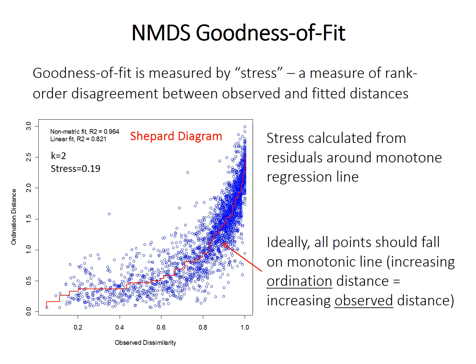The method uses this iterative technique — basically trial and error — to find the best arrangement of points in ordination space. In this case, 'best' is defined by a parameter called stress, which is a measure of the goodness of fit. The Shepard diagram shown here plots dissimilarity in the full-dimensional real-world space on the x-axis and distance in ordination space on the y-axis. If the fit were perfect, there would be a perfect rank order correlation, so the points would fall along a monotonically increasing line. Stress is calculated from the residuals of the points — the blue dots — around that monotone regression line, shown in red.